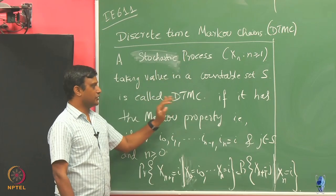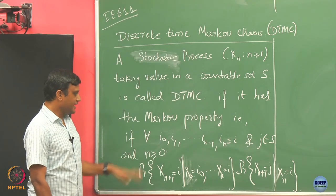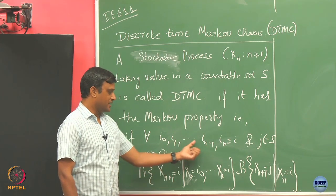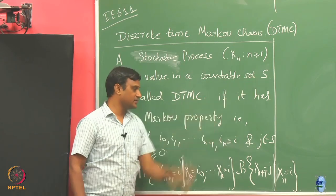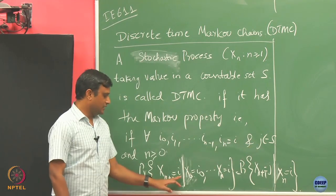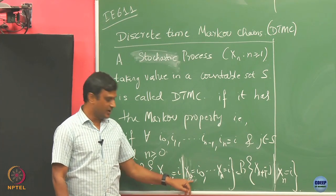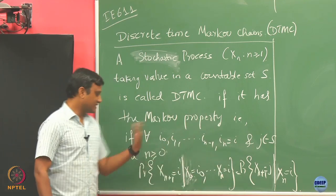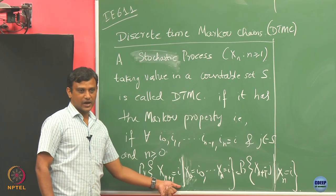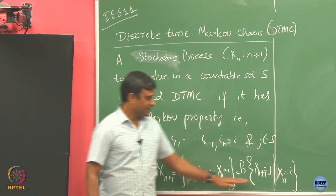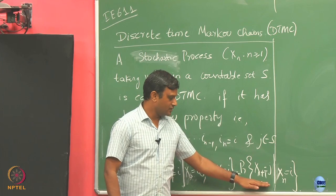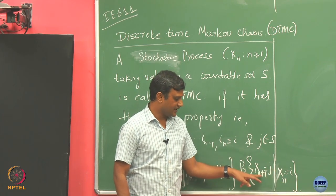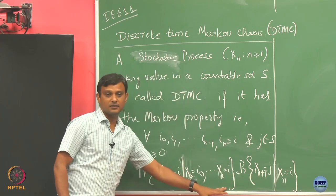We call this stochastic process a discrete time Markov chain if, given that X0 took value i0, all the way up to Xn took value i, the probability that Xn+1 takes value j depends only on the current state Xn = i, and is independent of all previous values.